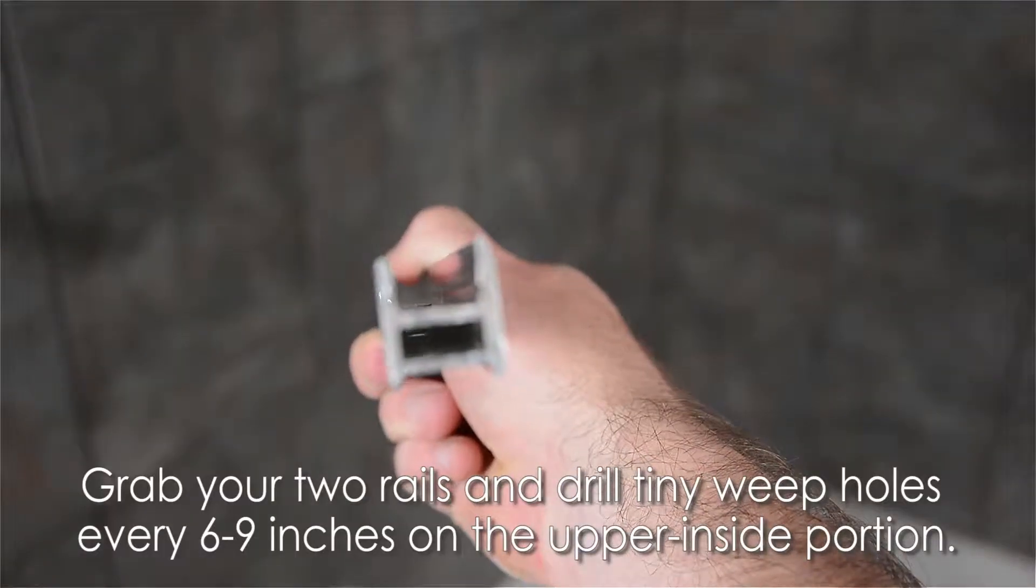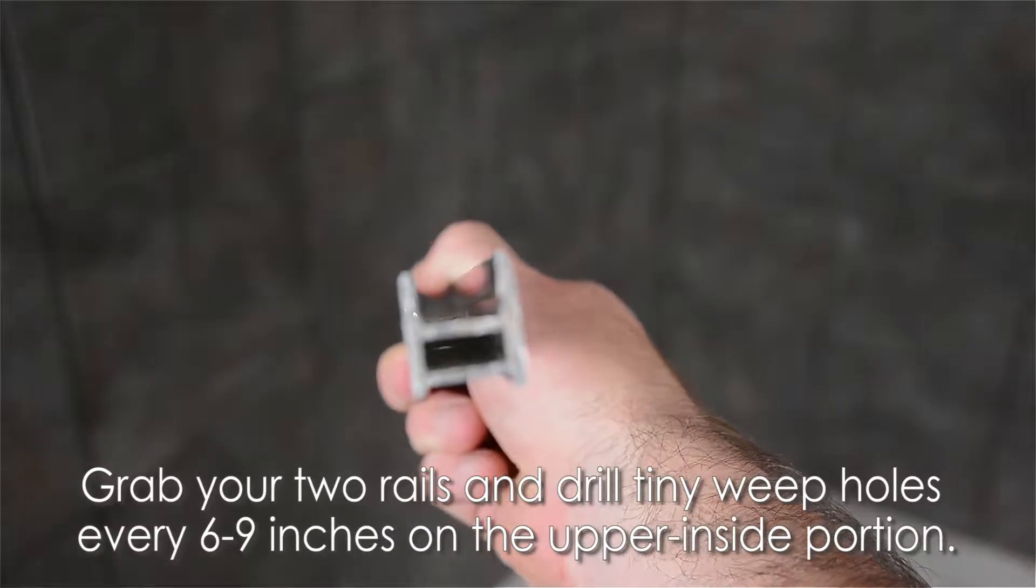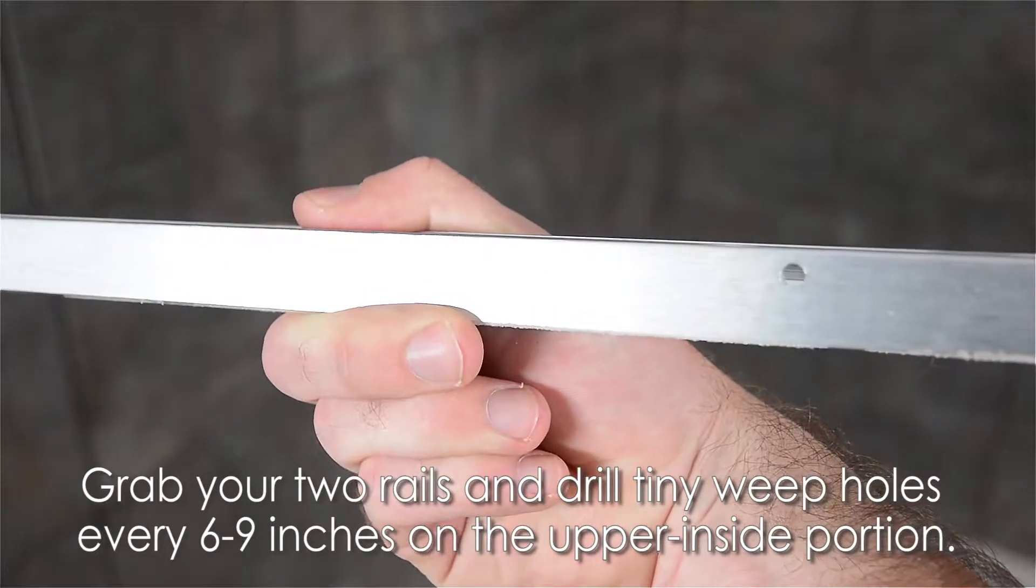Grab your two rails and drill tiny weep holes every 6 to 9 inches on the upper inside portion. This will prevent water buildup.